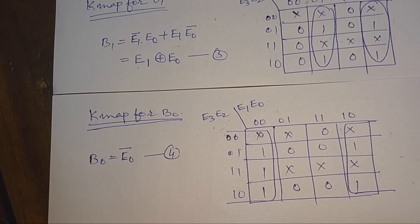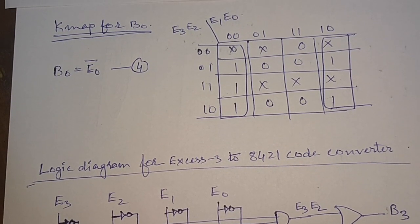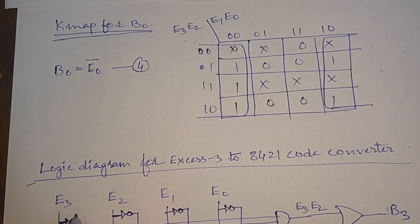These are the Boolean expressions or Boolean functions for the outputs B3, B2, B1, and B0. Now we will see the logic diagram for the XS3 to 8421 code converter, or XS3 to BCD code converter. We have four input lines: E3, E2, E1, and E0.